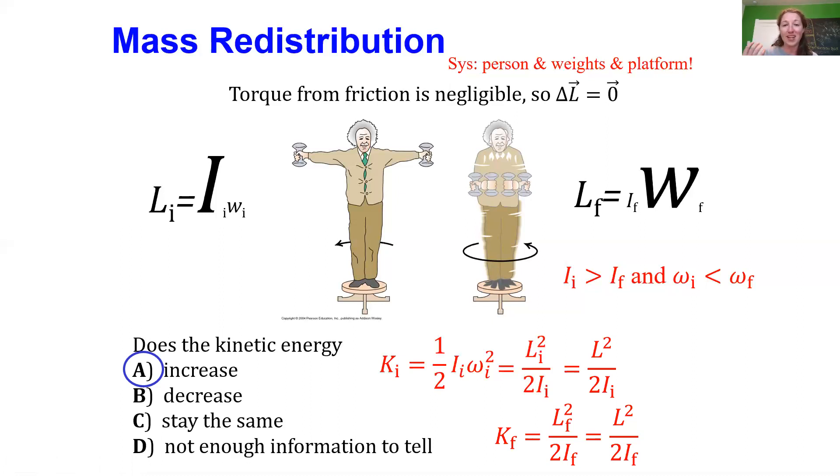So where does that increase in kinetic energy come from? Well, it comes from your muscles, just like with the baby push-up problem where you can't do push-ups forever, as we saw in topic 5-1. With pulling these heavy dumbbells in, it takes energy from your muscles to do that, and so that decrease in energy in your muscles corresponds to an increase in kinetic energy.